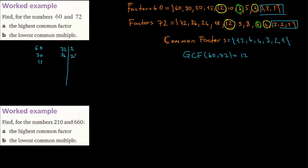Dividing again by 2: 30 ÷ 2 = 15, and 36 ÷ 2 = 18. Now 15 is not divisible by 2, but 18 still is — 18 ÷ 2 = 9. Since 2 no longer divides 15, we move to the next prime, which is 3. Three divides both 15 and 9: 15 ÷ 3 = 5 and 9 ÷ 3 = 3. Then 3 ÷ 3 = 1, and 5 ÷ 5 = 1.